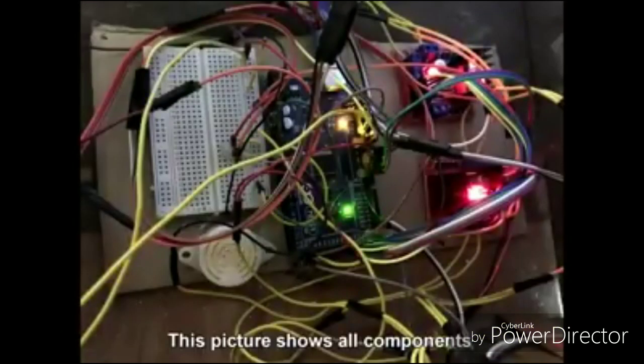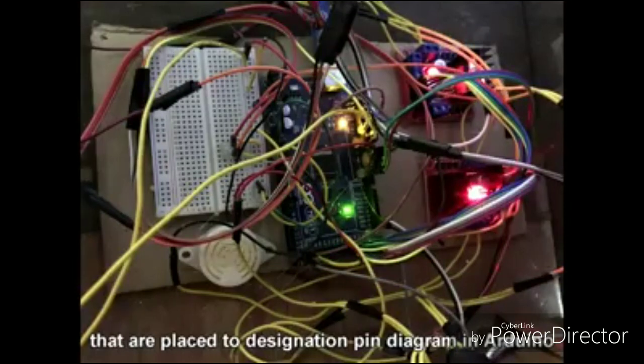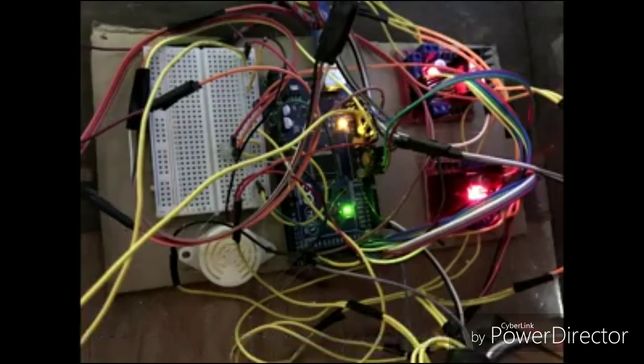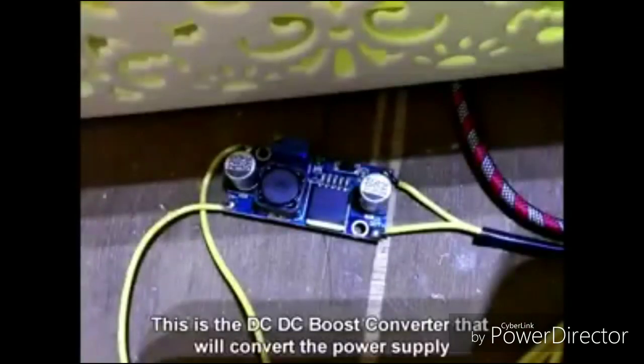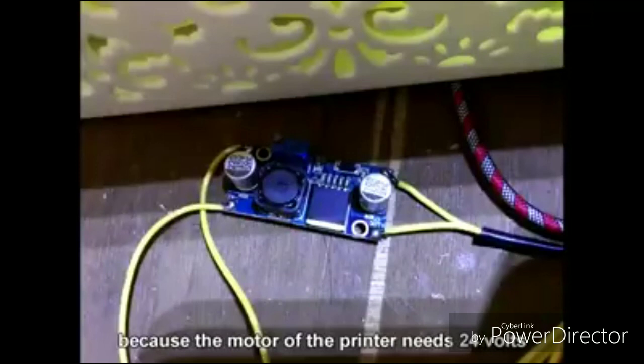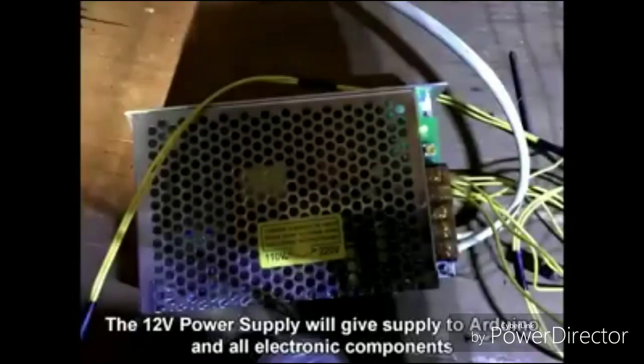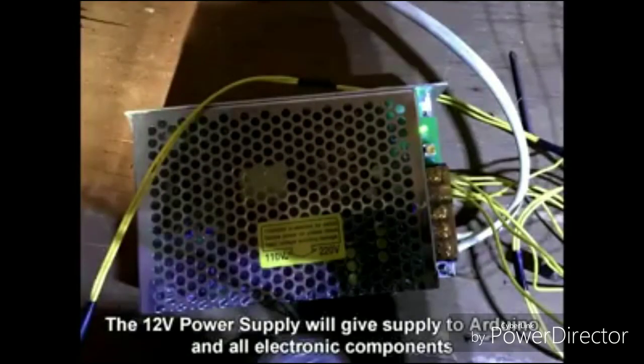This picture shows all components that replace the designation pin diagram in Arduino, because each pin diagram depends on the Arduino code. This is the DC-DC boost converter that will convert the power supply because the motor of the printer needs 24V. The universal USB charger will connect the Arduino to the power supply. The 12V power supply will give supply to Arduino and all electronic components.